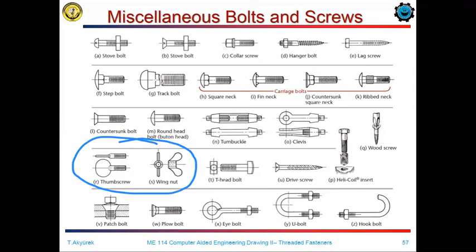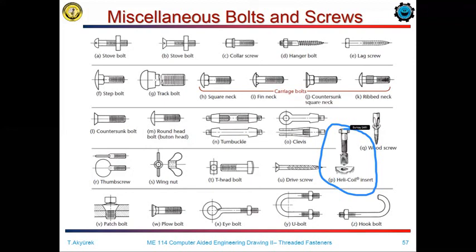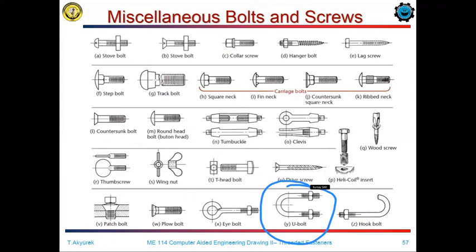We do not need any tool to disengage the bolt or nut from the connection. We also use helicoils, which are used to prevent damage to the part body and to keep the part body free from wear by concentrating the tightening effects on the helicoil insert. We also use U-bolts to make piping fixed, and hook bolts for anchorage purposes. This is the end of the course notes that we have covered so far.